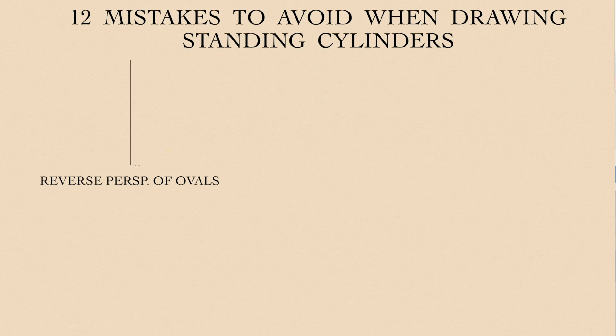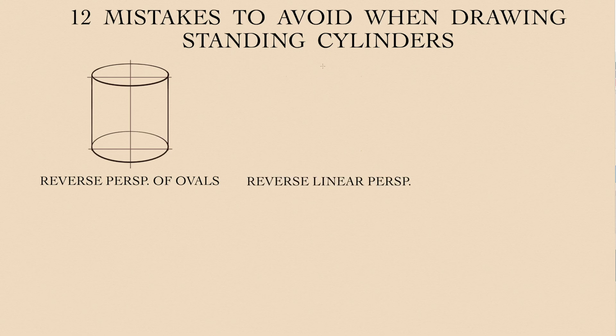The next mistake is made even by those artists who have some experience in constructive drawing. Reverse perspective of ovals tells that an artist misunderstands the principles of linear perspective. Another variation of reverse linear perspective happens when an artist does not follow the rule that the partly visible oval must always be fuller than the visible one.